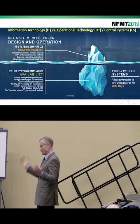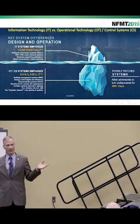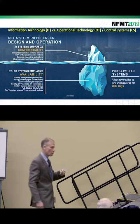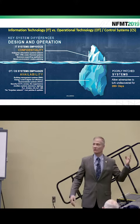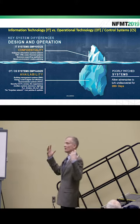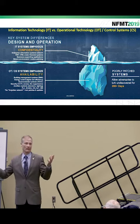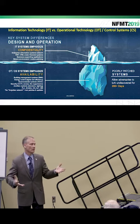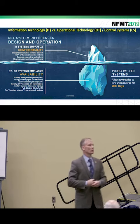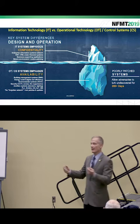This is operational technology, also called industrial control systems or cyber-physical systems. There are a lot of different names for these, but it is just different — if you can think about it — than your traditional email system, which is traditional information technology.